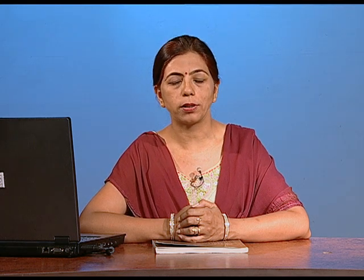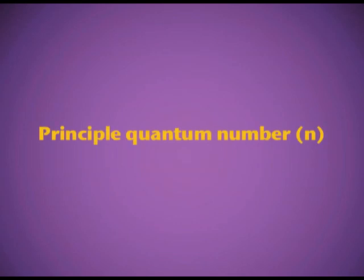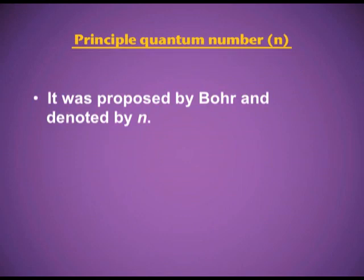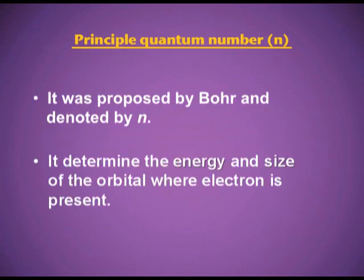Let's discuss each quantum number one by one. The principal quantum number is represented by small n. Its permitted values are 1, 2, 3, 4 and so on — it can never be zero. It explains the energy and the size of the shell. This quantum number was proposed by Bohr, and it determines the energy and the size of the orbital where the electron is present.